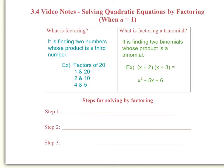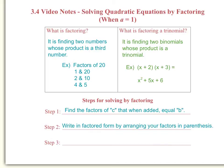Now the first step in solving by factoring is to find the factors of c that when added equal b. What I mean by that is you need to find the factors of the c value. In our example, this would be the 6. What are the numbers that you can multiply together to equal 6? But if you add those numbers, they will equal 5, which is the b value. The second step is to write in factored form by arranging your factors in parentheses, which I'll show you in the example.